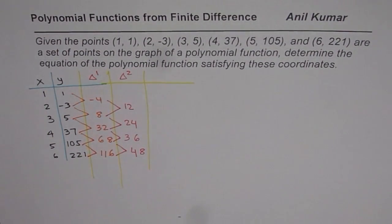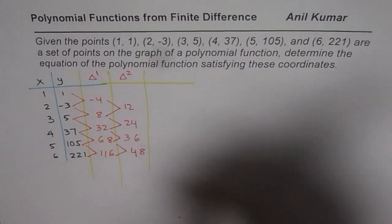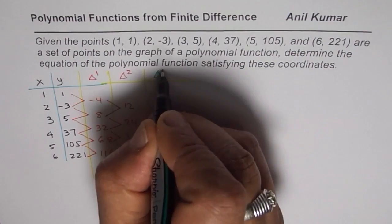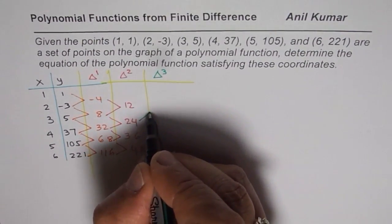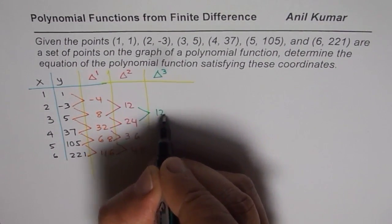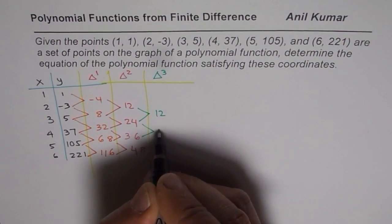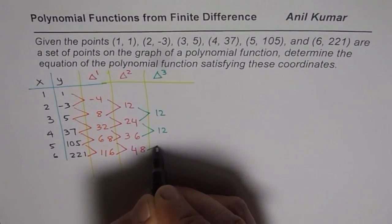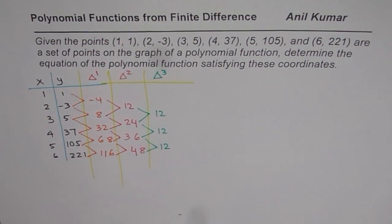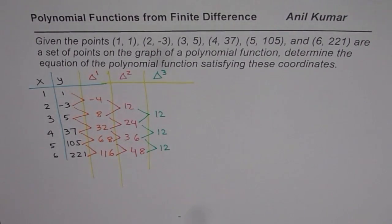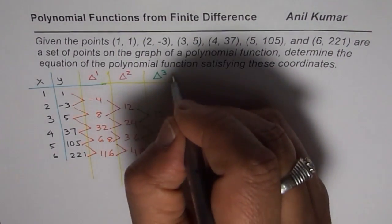Now in this case, third finite difference is what? 24 minus 12 is 12, 36 minus 24 is 12, 48 minus 36 is also 12. So what we find is that the third finite difference is constant.